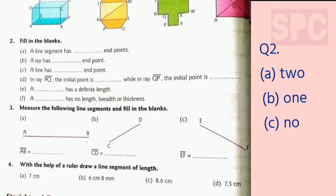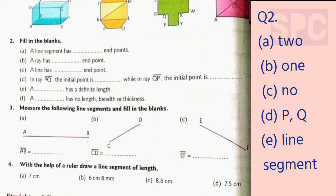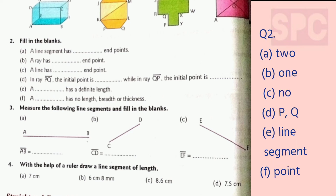A line segment has a definite length which can be measured. A line keeps stretching in both directions so it has no definite length. Similarly, a ray also keeps stretching in one direction, so a ray also has no definite length. Therefore, we write: a line segment always has a definite length. Part F — a ___ has no length, breadth, or thickness. The answer is a point.